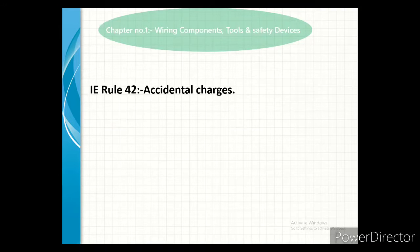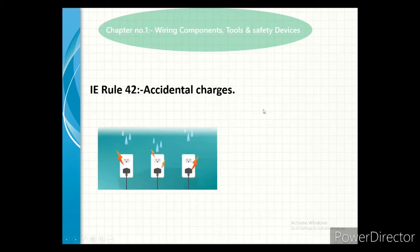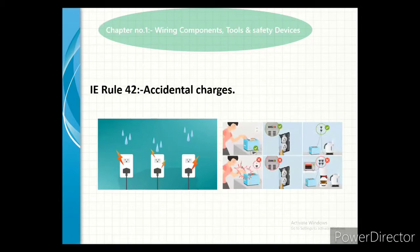Rule number 42 - Accidental Charges. This rule tells us that any part of our circuit and apparatus shall be considered dangerous. As a precaution, the apparatus should not be hazardous for any human beings or animals.